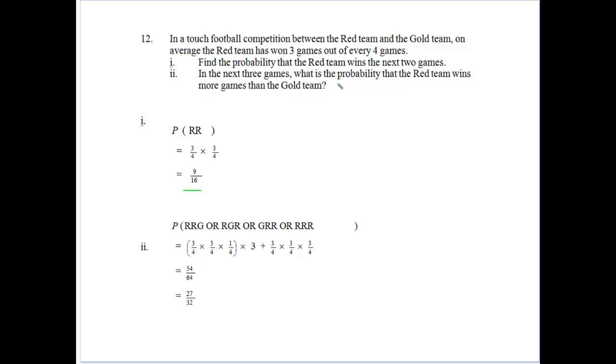And in the next three games, what's the probability that red wins more games than gold? Well, that would be a situation where red wins two and gold win one in one form or another. So they win two out of the three games or three out of the three games. So two out of three games can occur three quarters times three quarters times a quarter. And that occurs three times there. Or they win all three as three quarters to the power of three. So we can work it out and throw that in the calculator. We get 27 on 32.